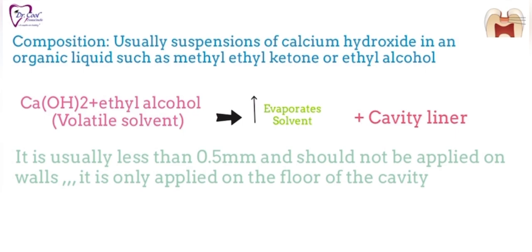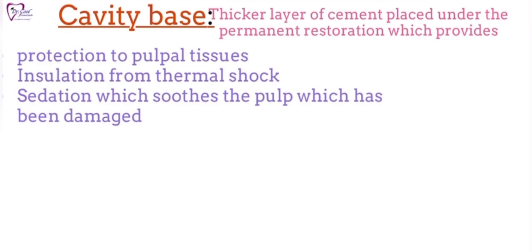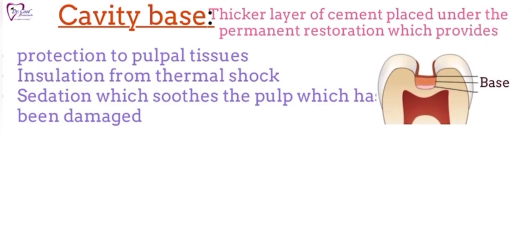The cavity liner is usually less than 0.5 mm and should only be applied on the floor of the cavity, not on the walls. Coming to the cavity base — it is a thicker layer of cement placed under the permanent restoration, providing protection to pulpal tissues, insulation from thermal shock, and sedation which soothes the pulp that has been damaged by irritants.